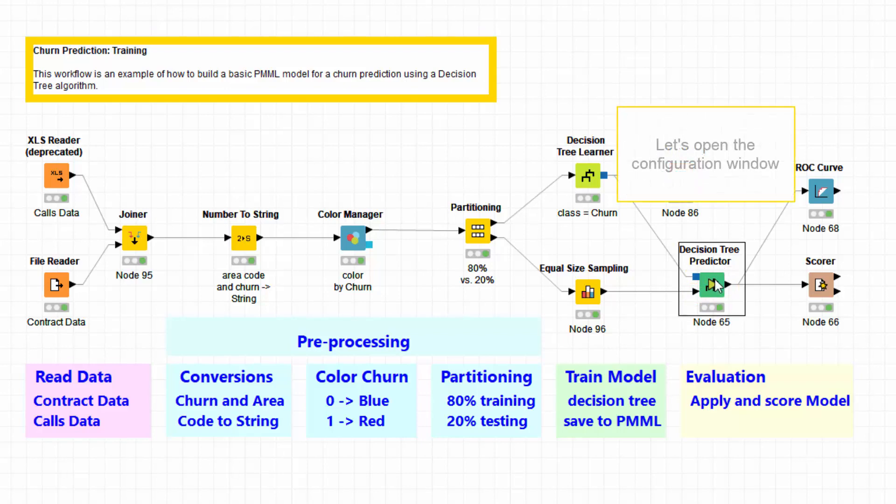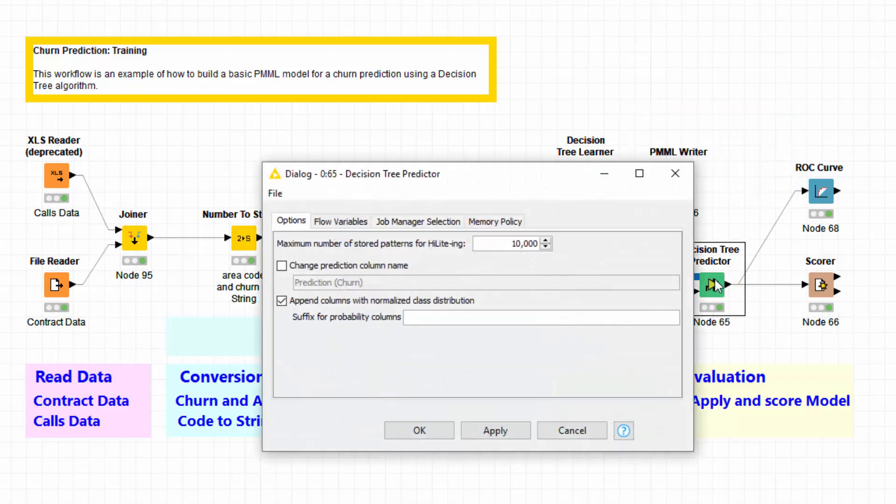Let's open the configuration window. No settings really are required by the predictor node. After all, the information needed is all already in the input model.